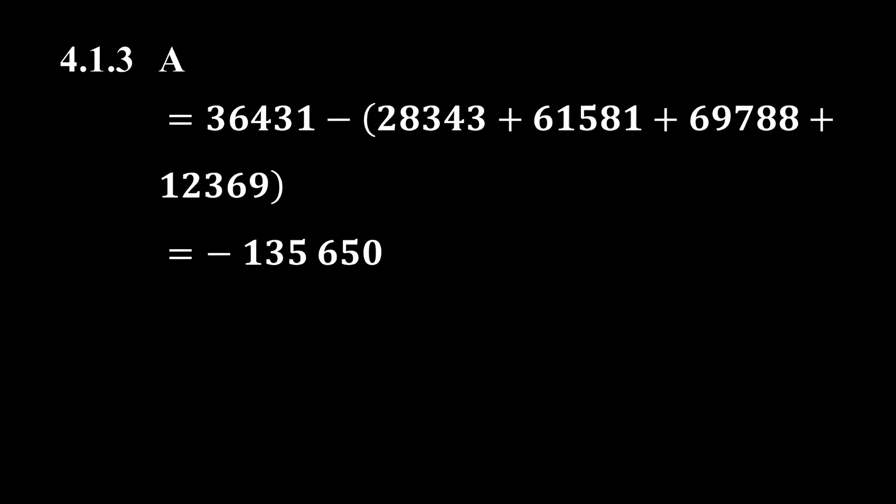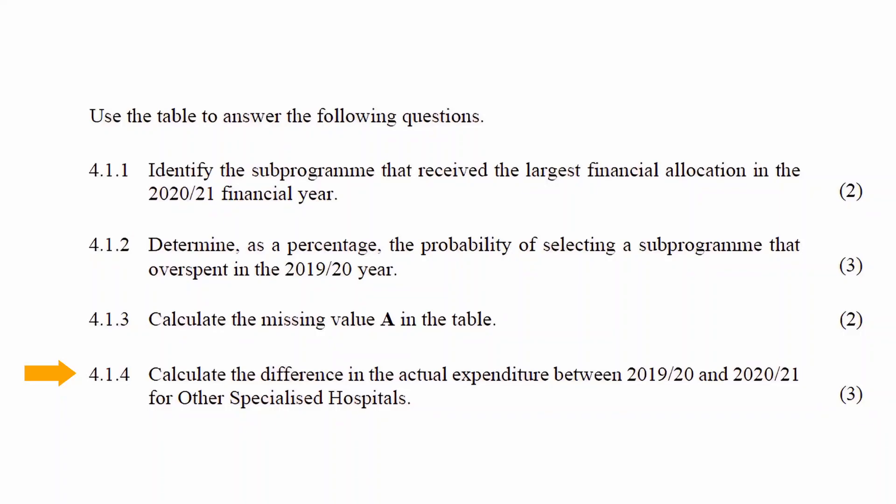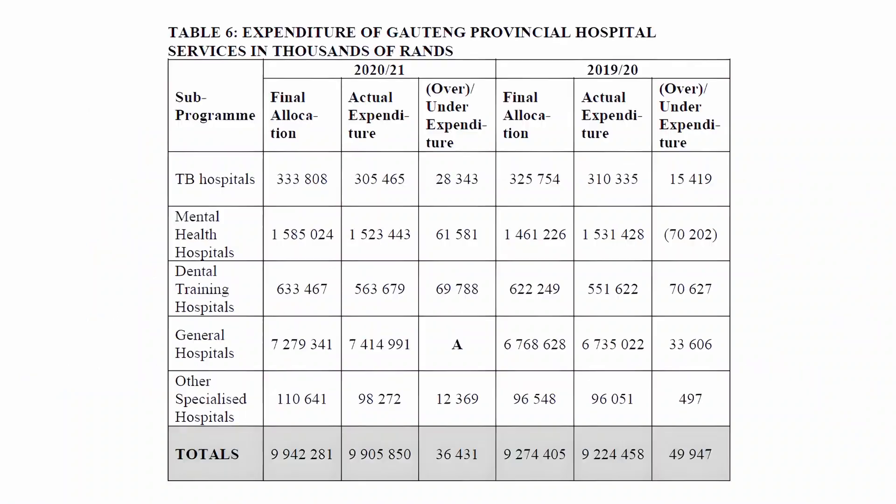The negative sign means that general hospitals overspent in the 2020-2021 tax year. In Question 4.1.4, you have to calculate the difference in the actual expenditure for the 2019-2020 and the 2020-2021 tax year for other specialized hospitals.